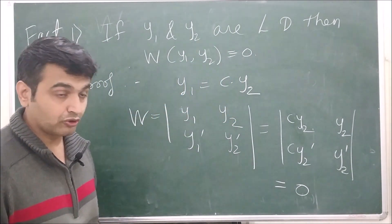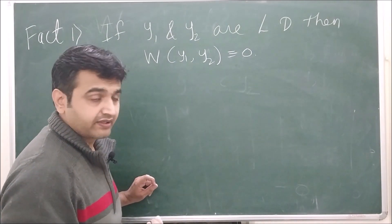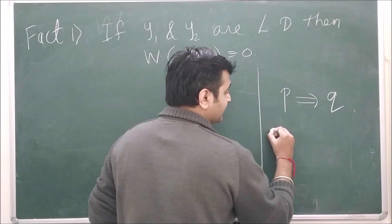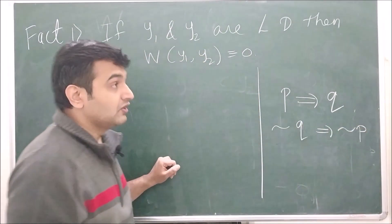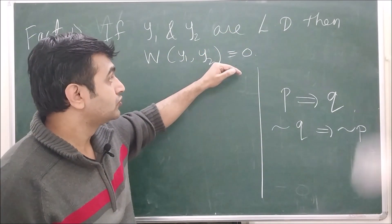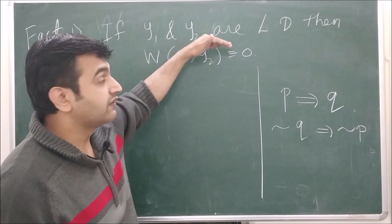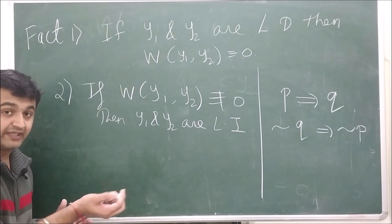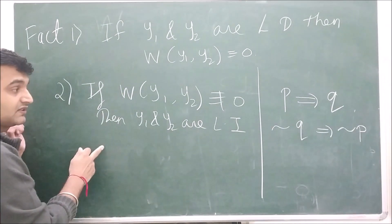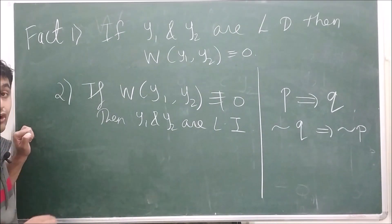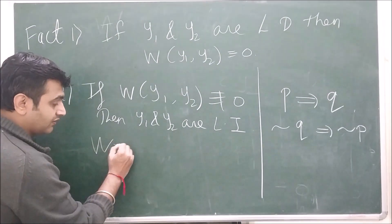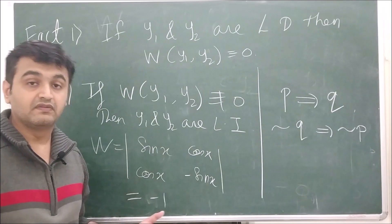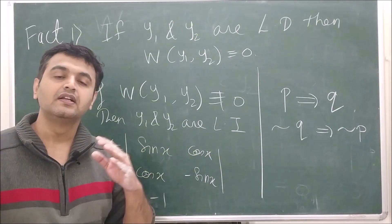Using contrapositive logic: if dependency implies Wronskian = 0, then Wronskian ≠ 0 implies linear independence. You can verify this for sin x and cos x: the Wronskian is the determinant of [[sin x, cos x],[cos x, −sin x]], which equals −1, a non-zero value, confirming sin x and cos x are linearly independent.